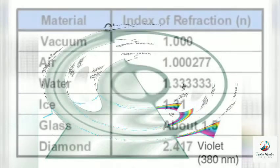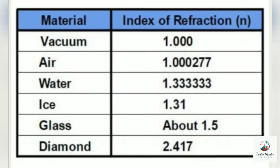This table shows the refractive index of various materials, including a glass prism. The more the refractive index, the more the bend in the refracted beam.